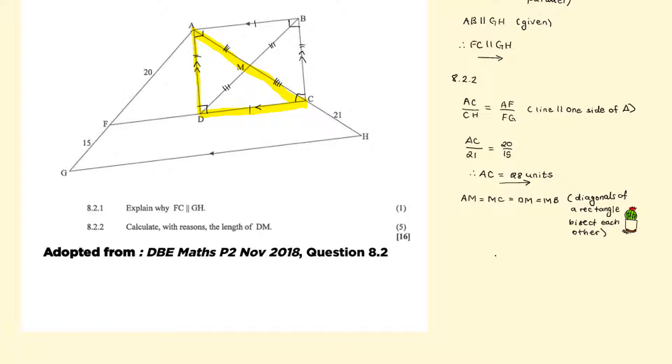Now since AC equals AM plus MC, therefore AC is the same as saying 2 times AM. Because AM equals MC.